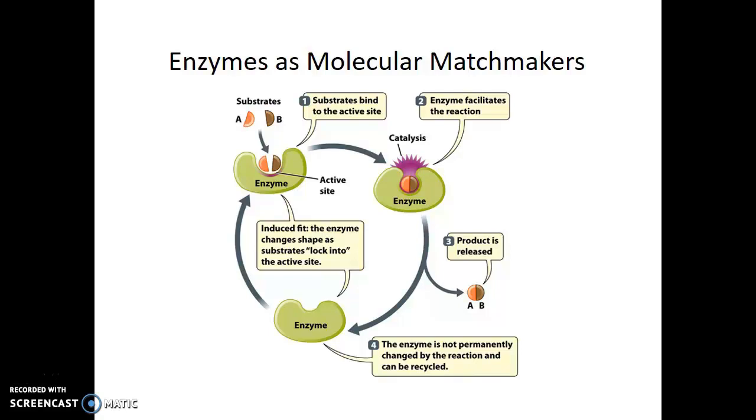Well, the enzyme is able to do this because as soon as it comes in contact with A and B, it positions them properly, and then after the chemical reaction has occurred, it releases the product and the enzyme can be used again.